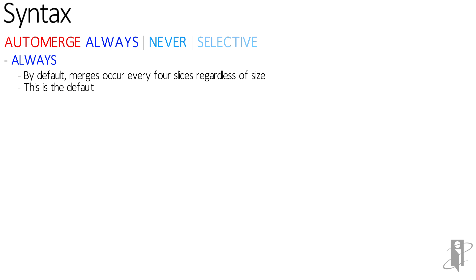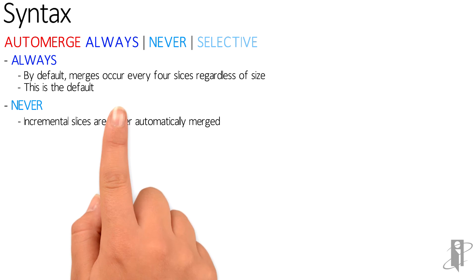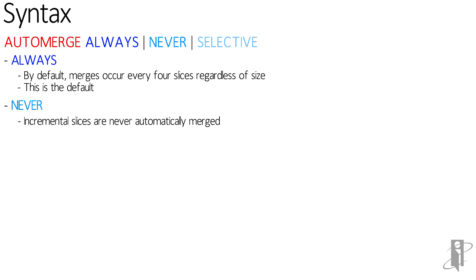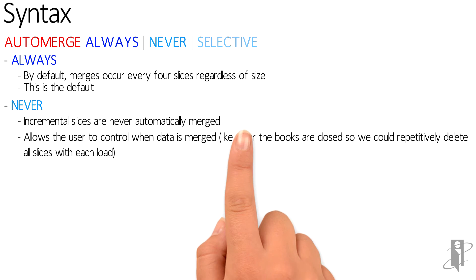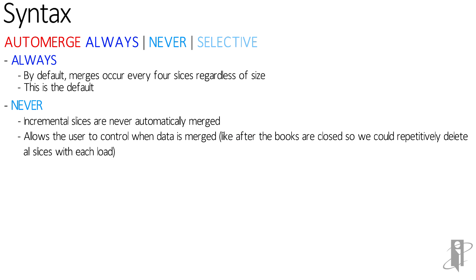With never, incremental slices are never automatically merged, and this allows the user to control when the data is merged.